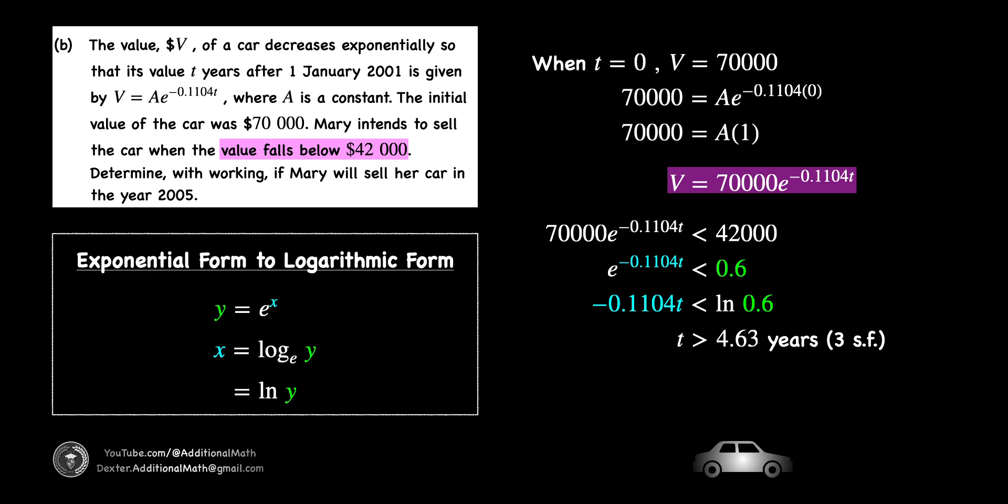Solving this inequality by dividing negative 0.1104, our t is found to be greater than 4.63 years. If we start counting from 1st of January 2001, 4.63 years will be sometime in the second half of year 2005. Thus, we conclude that Mary will sell the car in the year 2005.